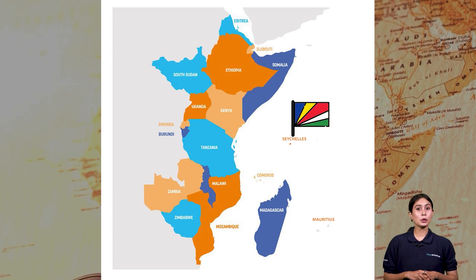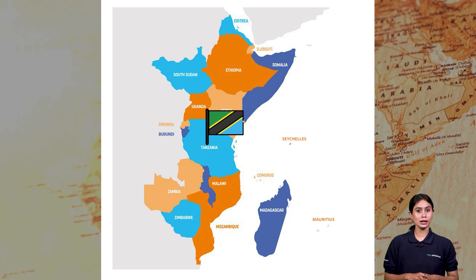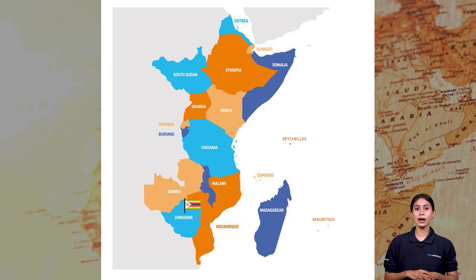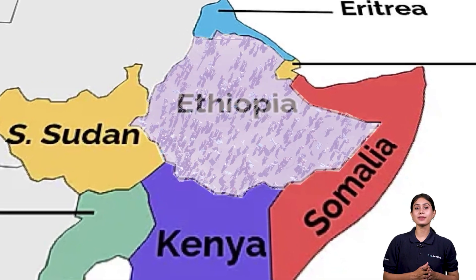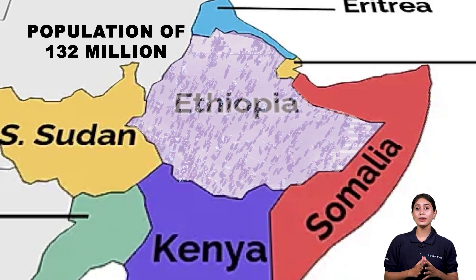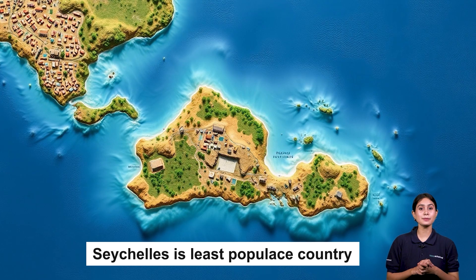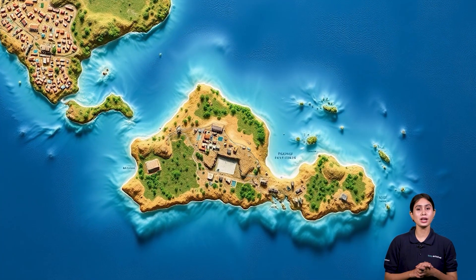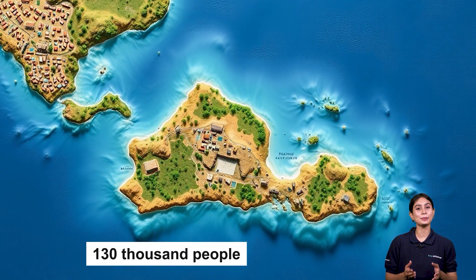Seychelles, Somalia, South Sudan, Tanzania, Uganda, Zambia, Zimbabwe. Ethiopia is the most populous country with a population of nearly 132 million. The Seychelles is the least populous, which is an island country with just over 130,000 people.